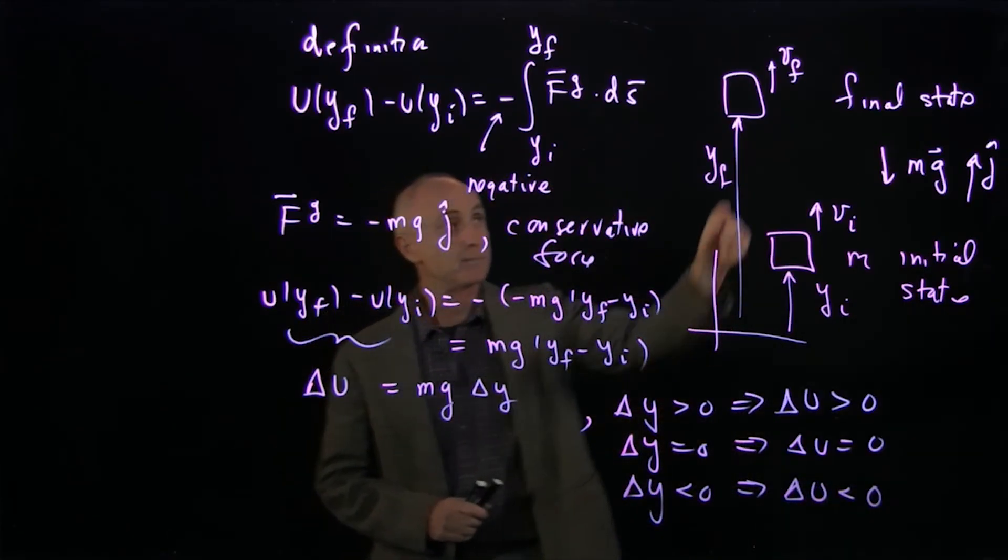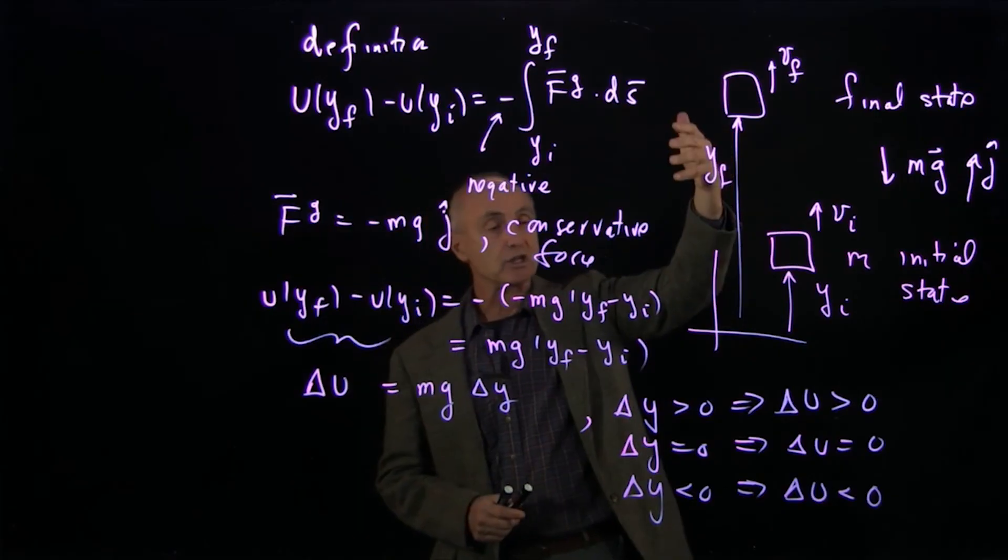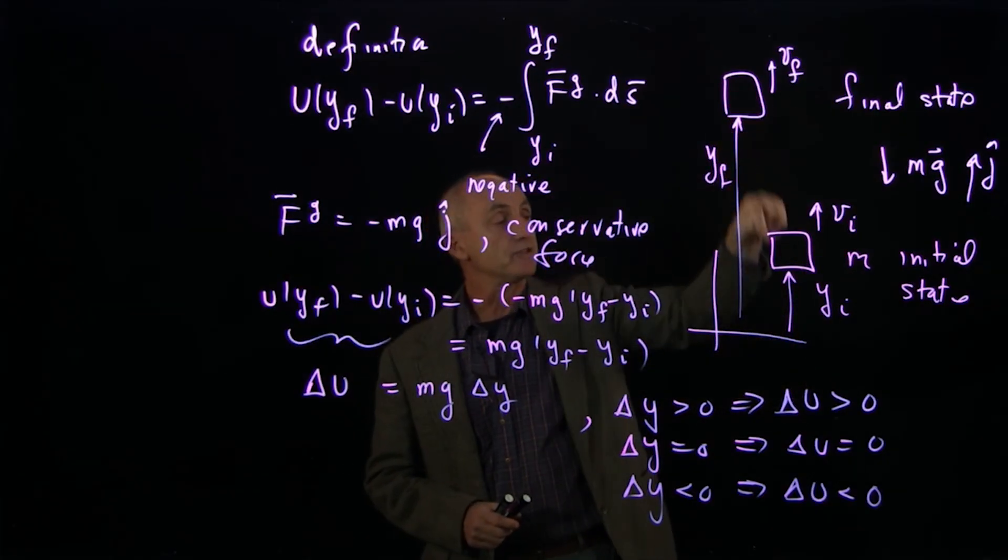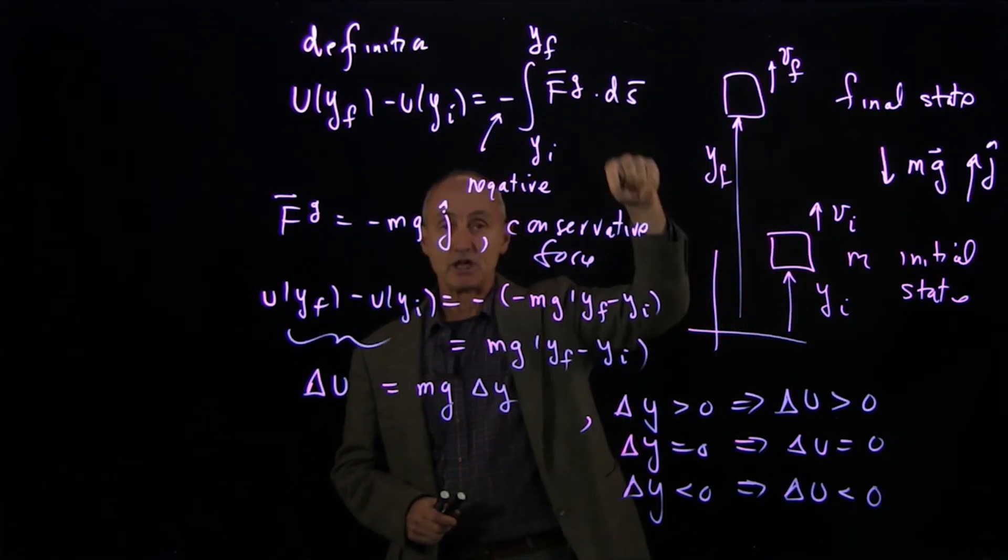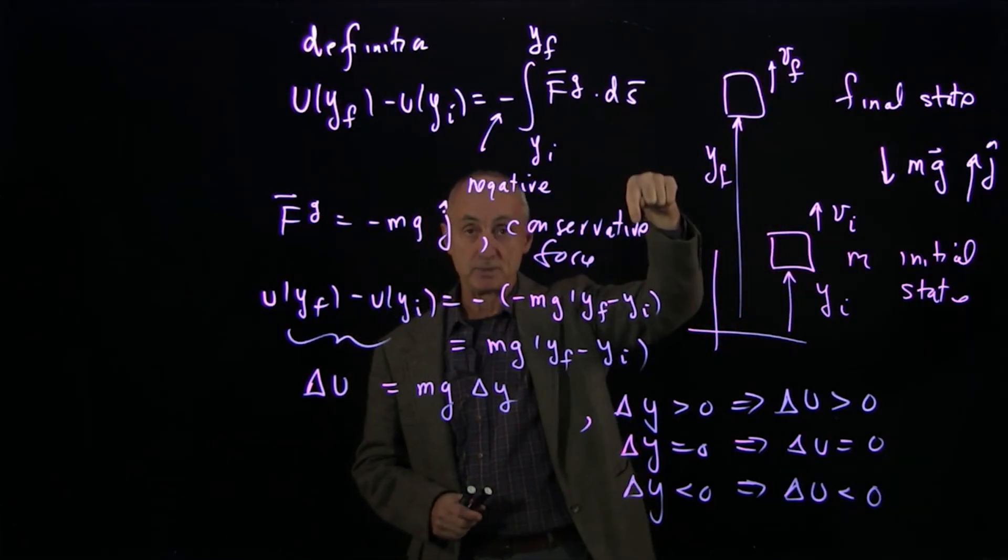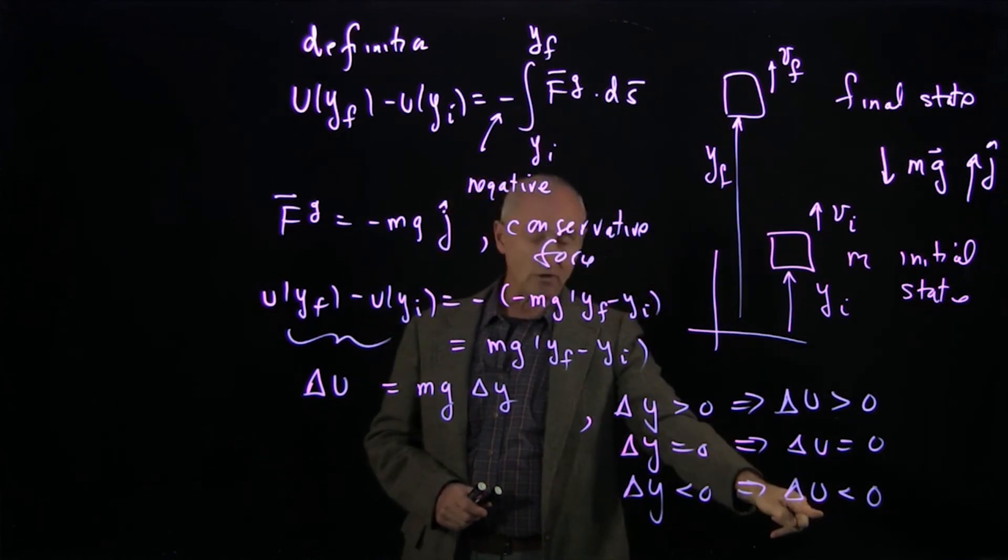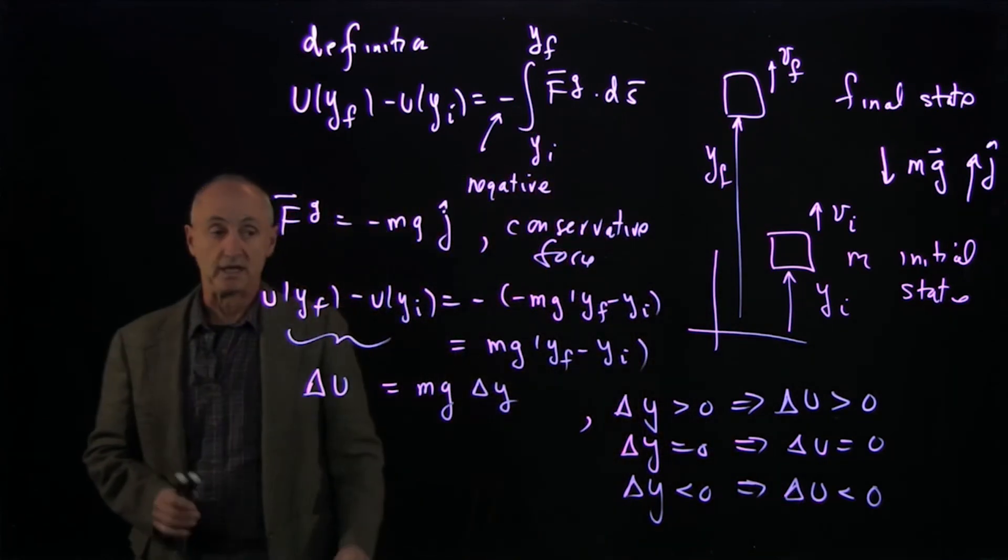Now, again, let's examine this case. If we were actually lowering an object, dropping it down, the object moved downward from an initial state to a final state, the gravitational force is downward, the displacement is downward, the integral is positive, the extra minus sign corresponds to the change of potential energy being negative.